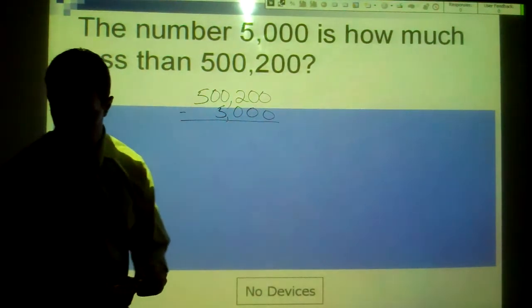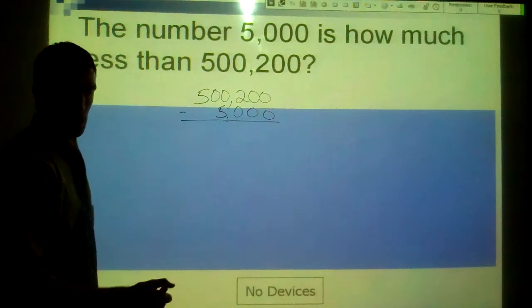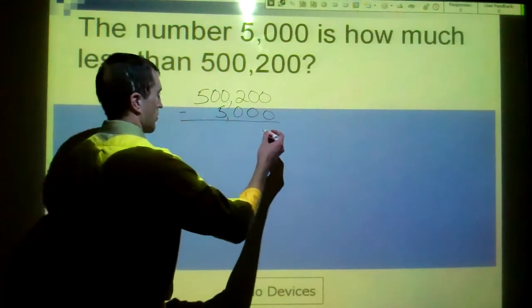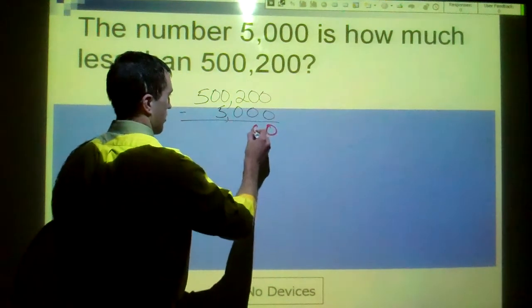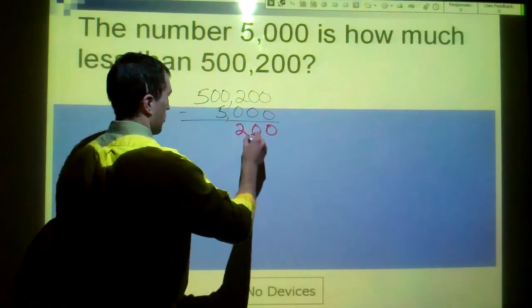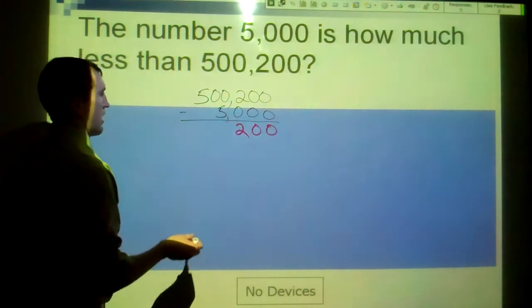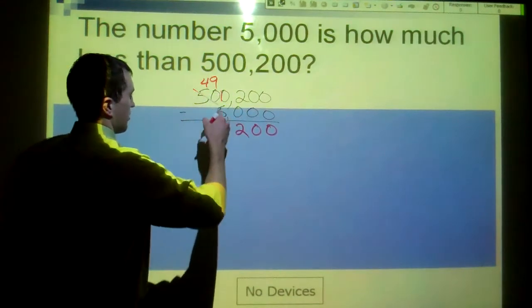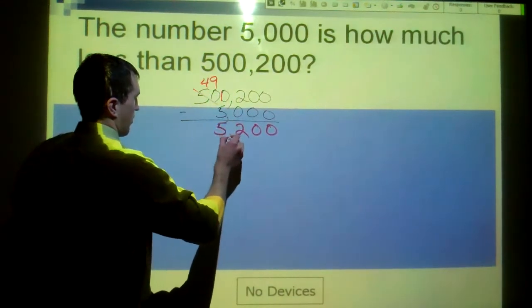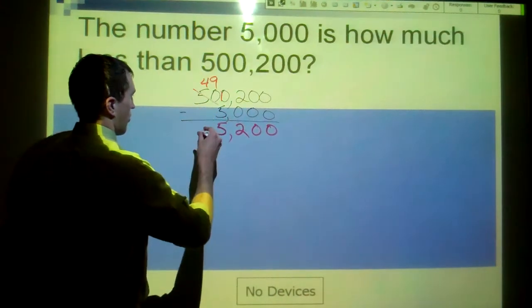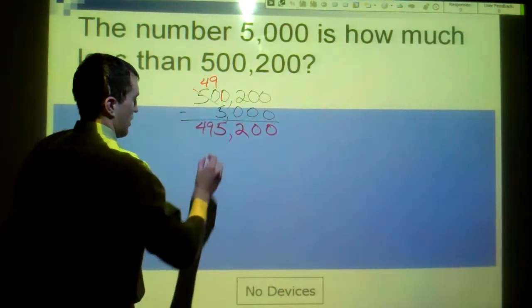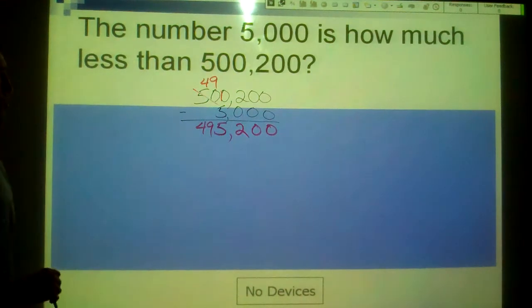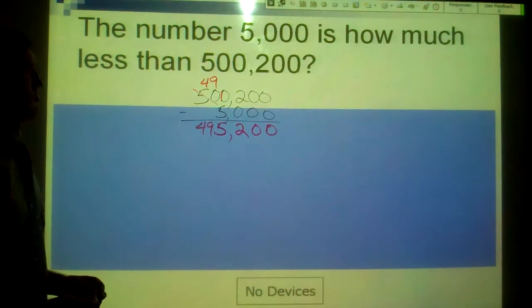Marker's getting a little dry. 0 minus 0 is 0. 0 minus 0. 2 minus 0 is 2. 0 minus 5, we can't do that. So we're going to borrow from 50 here. Take one away. 10 minus 5, we get 5. 49 minus 0, 49. So 495,200 more than 5,000.